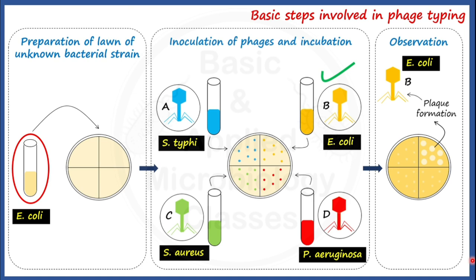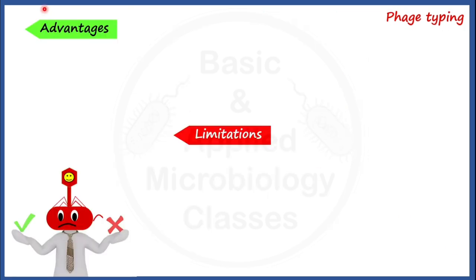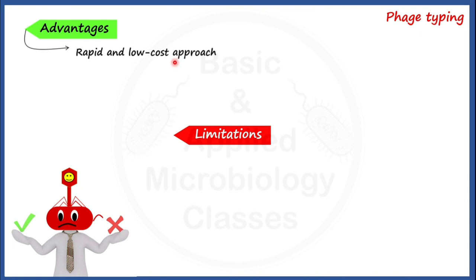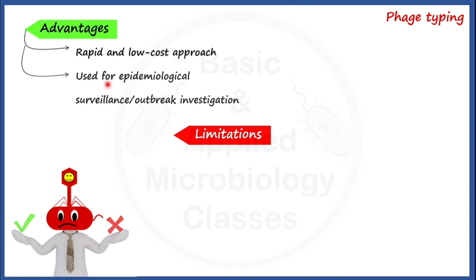Now let's talk about the advantages and limitations of phage typing. For advantages: it is a rapid and low-cost approach. It is also widely used for epidemiological surveillance and outbreak investigations.